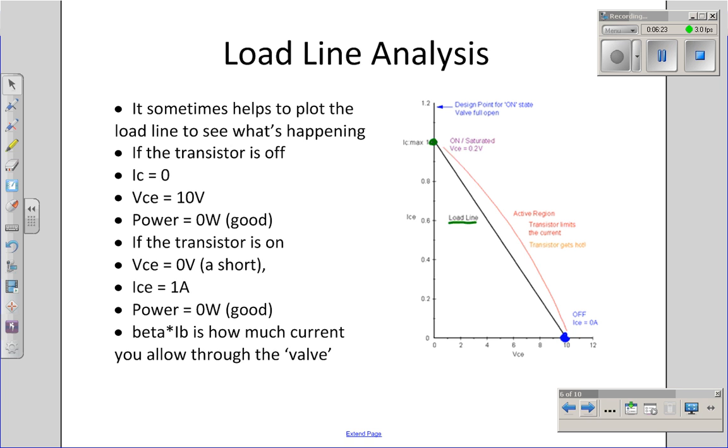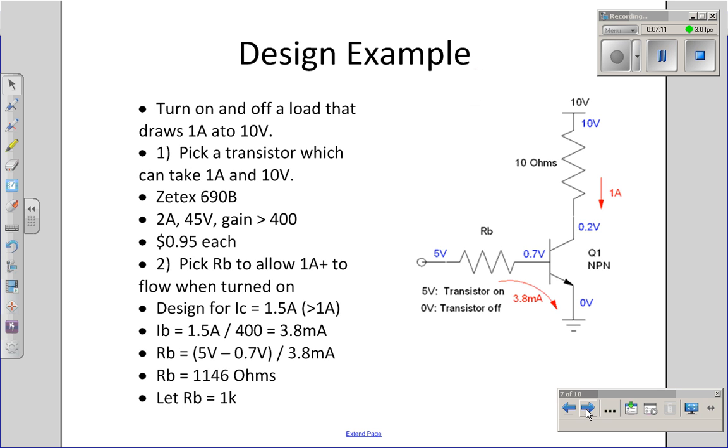The middle area is called the active region. That's where the transistor actually gets hot. The power is volts times amps. Over here, when I'm off, power equals zero. Current is zero, so power is zero. Over here, power equals zero. Voltage is zero, so volts times amps is zero. In the middle, the transistor is actually dissipating energy. It will get hot. I want to avoid that. To make sure I saturate, what I'm going to do is pick beta times IB to be more than one amp, say 1.2 amps. So this is my design point for the on state. That will be my safety margin to make sure that I saturate.